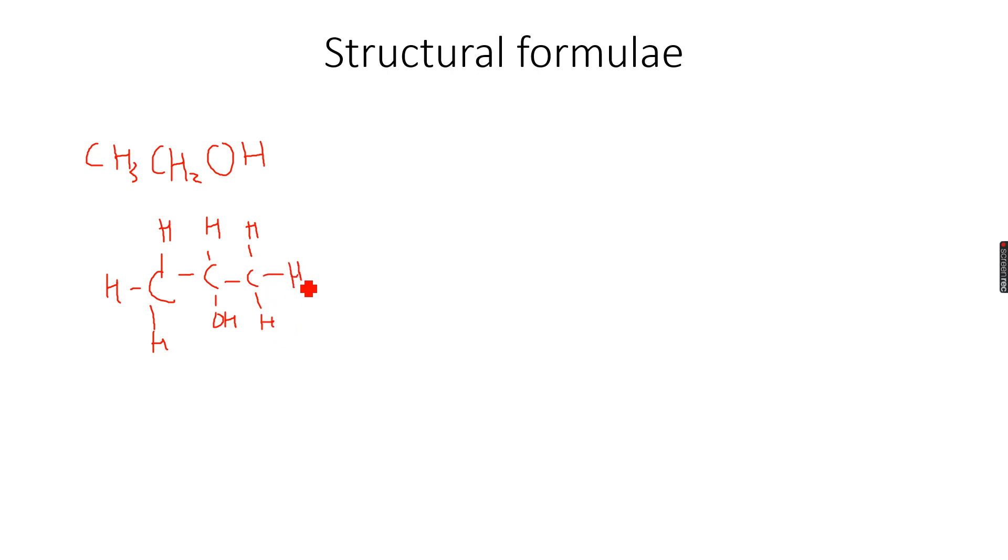So you can see that there are three carbon atoms. So it's an isomer of propanol because it's actually propan-2-ol because the alcohol group is on the second carbon atom. So how do we write the structural formula for this?